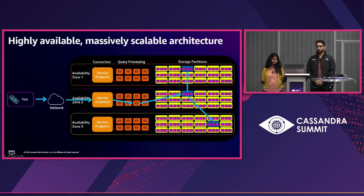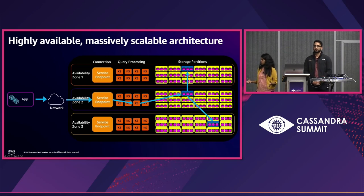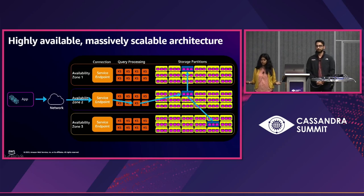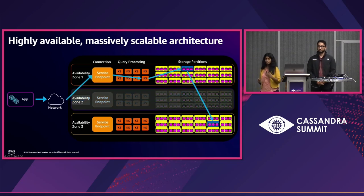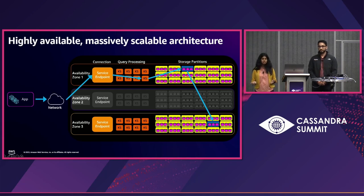Zooming out, we have a client application hitting the service endpoint, and we have many service endpoints across different availability zones, different Keyspaces service nodes, and multiple storage partitions. We show at least three availability zones because we replicate data across at least three AZs. So even if one AZ is impaired — say AZ2 — we re-resolve the DNS to an active endpoint, and your requests flow through without interruption, without any availability or performance impact.